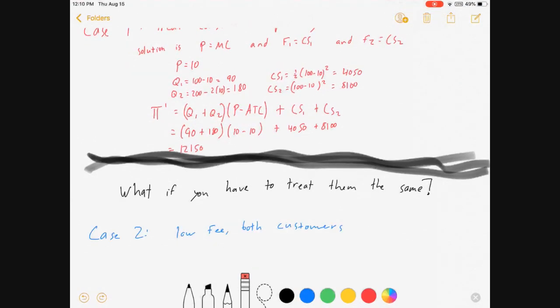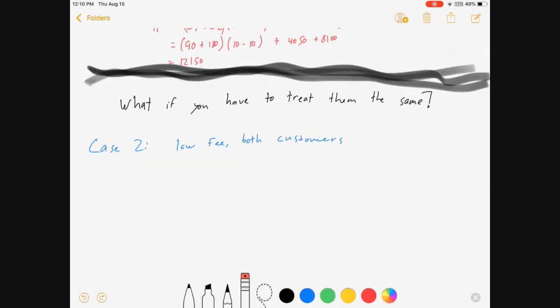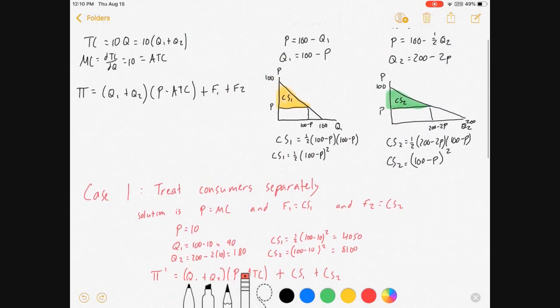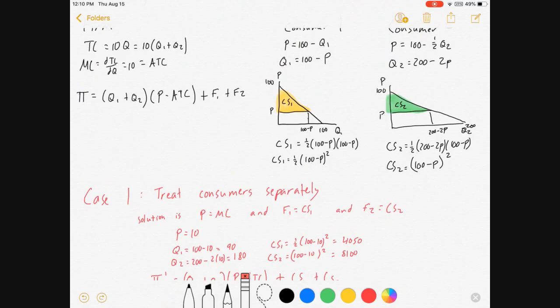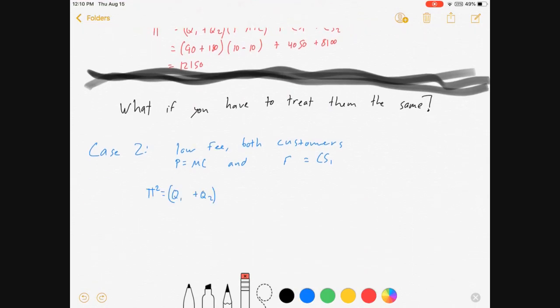What if you have to treat them the same and charge the same fee to both of them? Let's look at three different cases. I'm going to give you a spoiler: cases 2 and 3 are not helpful, but I'm going to show them because I think the comparison is helpful. Case 2 would be: what if you charge a low fee to both consumers? Namely, you set your price equal to marginal cost and your fee equal to the consumer surplus of consumer 1. CS1 is lower than CS2, so you're not getting as much money out of your second consumer, but you're getting all the money possible out of your first.